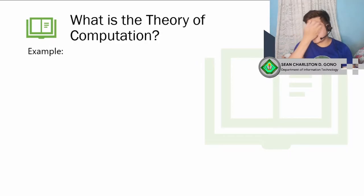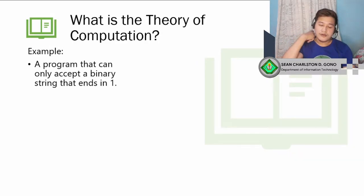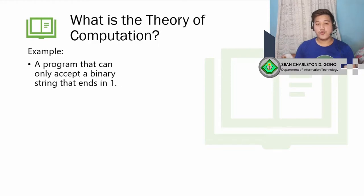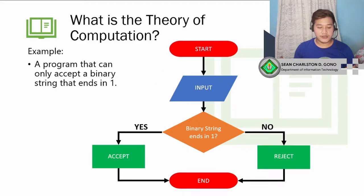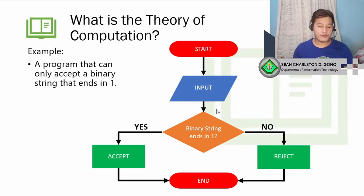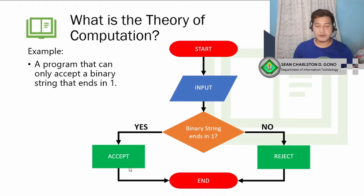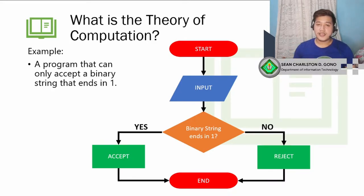Let's look at some examples. One example is a program that can only accept a binary string that ends in one. Can we create such a program? The answer is yes. Here is the flowchart: the program accepts an input, processes it, and asks whether the string ends in one. If it does, the program accepts it; if not, it rejects it. This problem is computable mechanically.